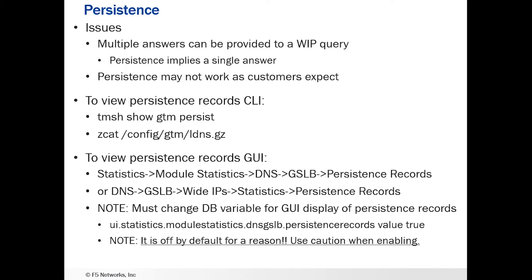You can look at the persistence records using the TMSH show GTM persist command. You can also zcat the /config/gtm/ldns.gz file. Those are where the records are written to disk by the GTM. They're updated periodically, so you can take a look at that and see what records are there.